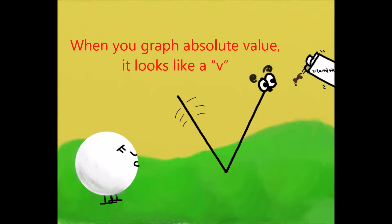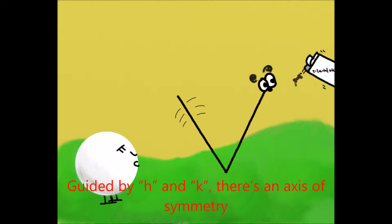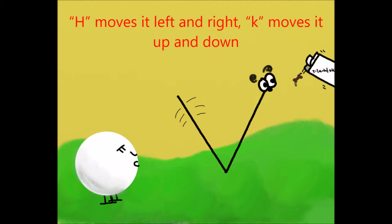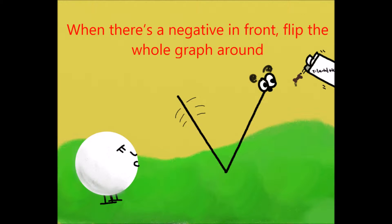When you graph an absolute value, it looks like a v. Guided by h and k, there's an axis of symmetry. h moves it left and right, k moves it up and down. When there's a negative in front, flip the whole graph around.